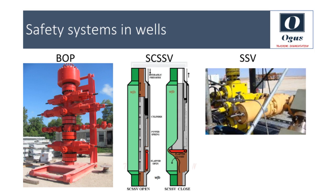Wells are usually equipped with fire and gas detectors to prevent against potential fire or leaks. The fire and gas detection panel is linked with the wellhead control panel so that on detection the well can be automatically shut to prevent any escalation of the situation.